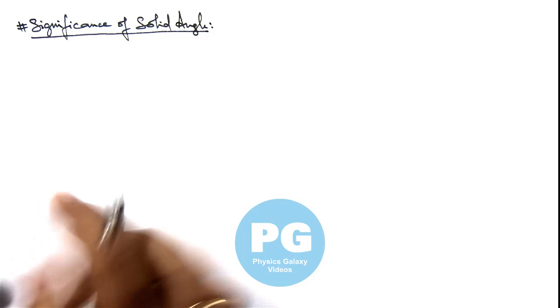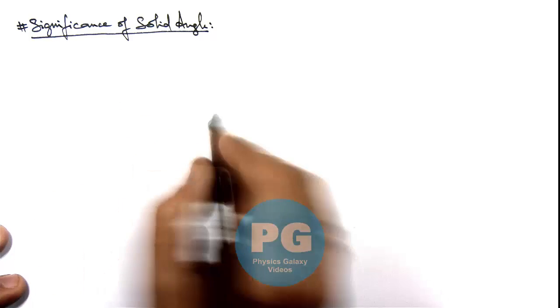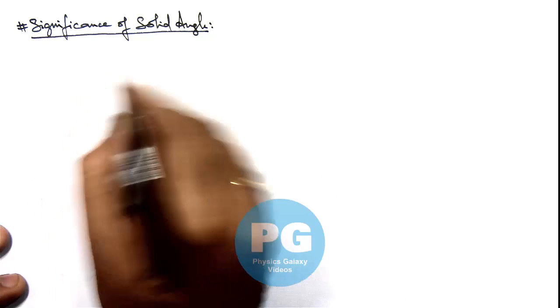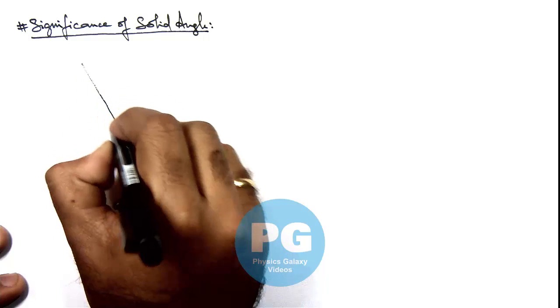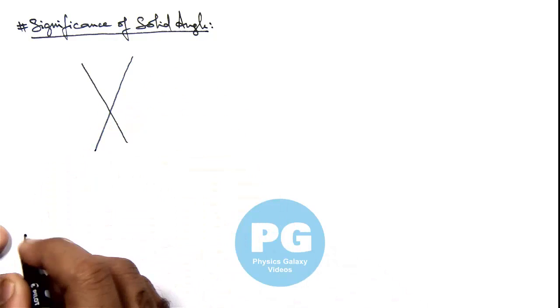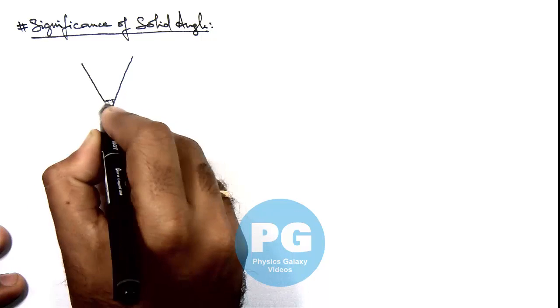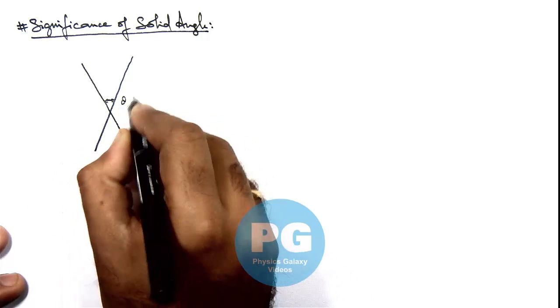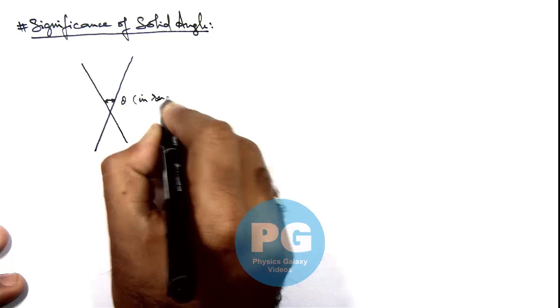But before going to the use and significance of solid angle, I would like to take up a basic idea about the use of a normal angle which we measure in radians. If there are two straight lines, then the angle between the two straight lines is given as theta, which is measured in radians.